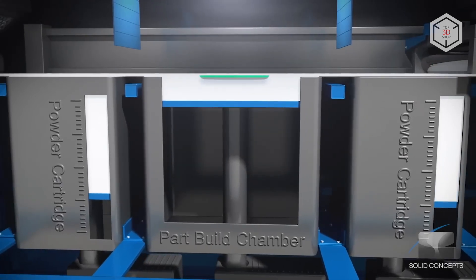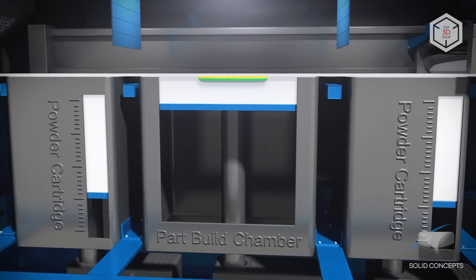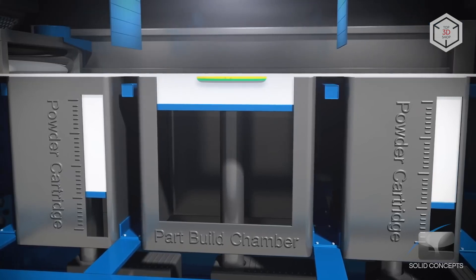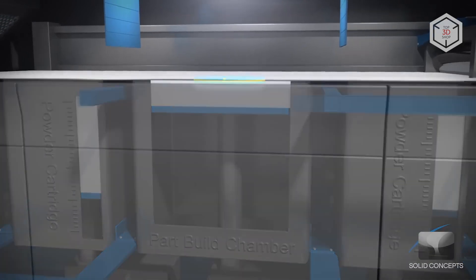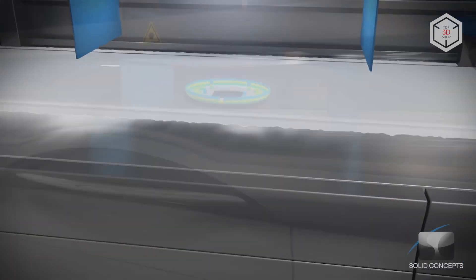The powder is dispersed in a thin layer on the print bed, and the laser heats certain areas so that the powder sinters and forms the first solid layer of the future model. The print bed then goes down a bit, and the process continues, layer after layer, until the job is done.